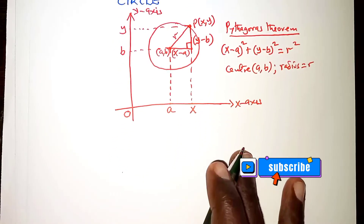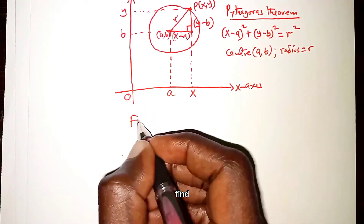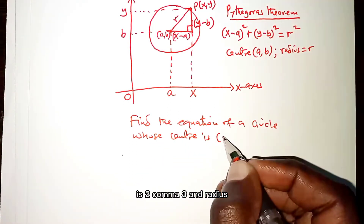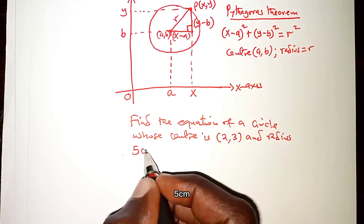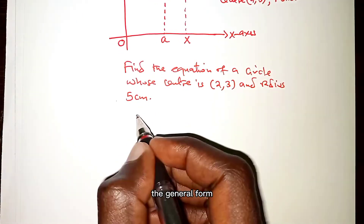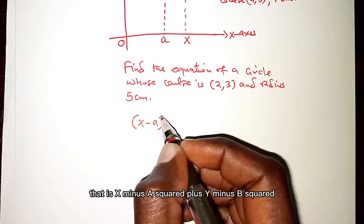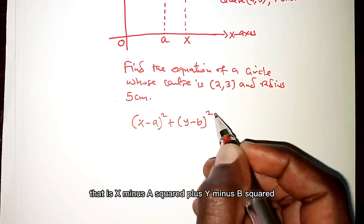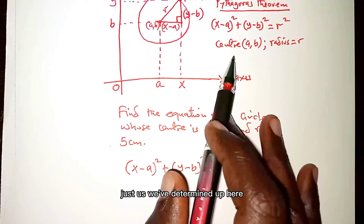So the center of the circle is (a, b) and the radius is R. Let's look at an example: find the equation of a circle whose center is (2, 3) and radius 5 centimeters. We are simply going to use the general form of the equation of a circle, that is (x minus a) squared plus (y minus b) squared equals R squared.